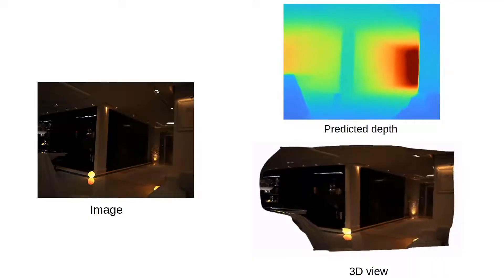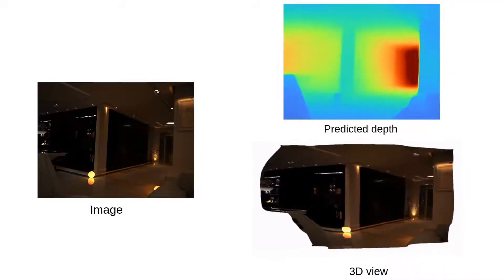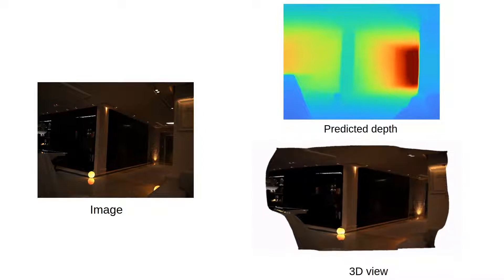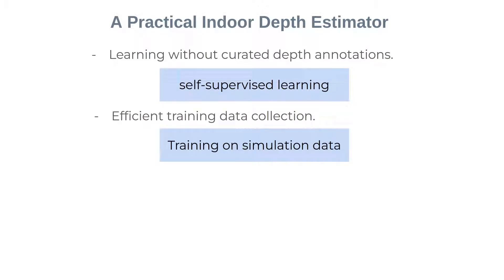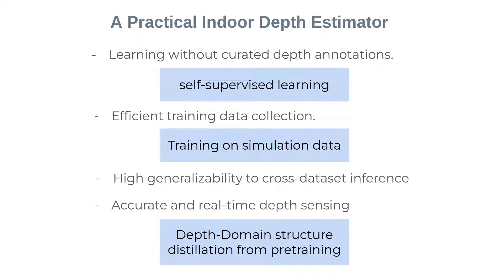Depth maps can be back-projected into 3D points and show valid disocclusion. We propose a practical indoor depth estimator including the following features: learning without curated depth annotations via self-supervised learning, efficient training data collection where training on simulation data can well transfer to real-world scenes, high generalizability to cross-dataset inference, and accurate real-time depth sensing.